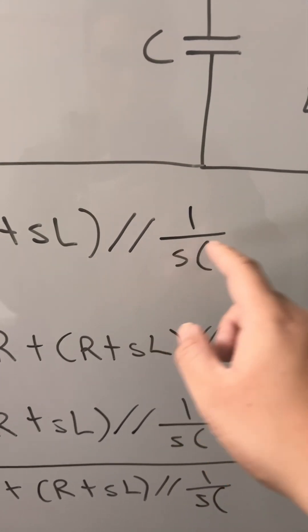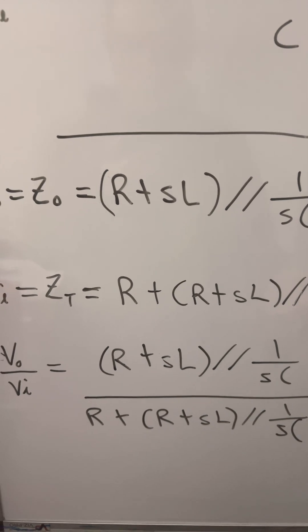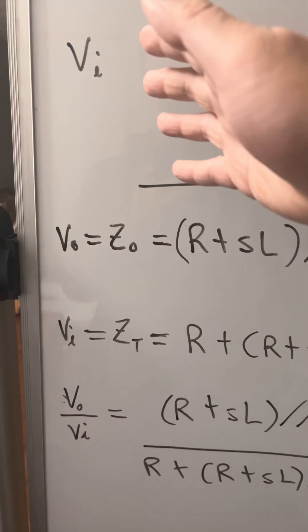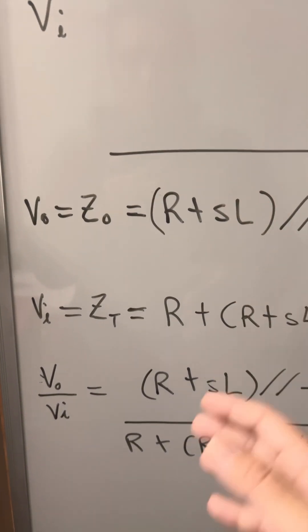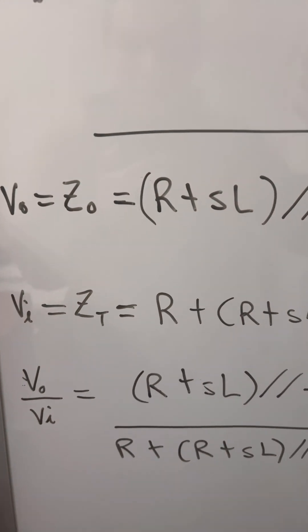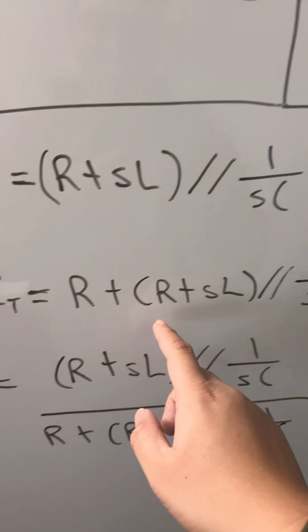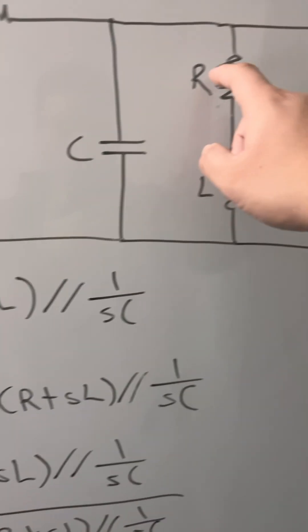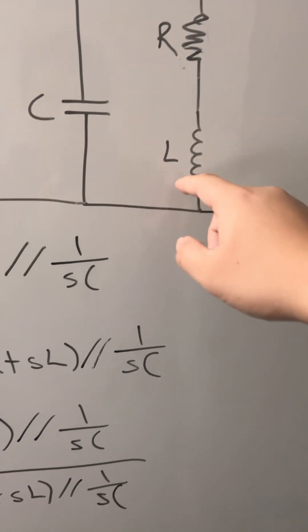Now we're going to do the V input equals your ZT, the total impedance. That will be R plus R plus SL, which is in series, in parallel with 1 over SC.